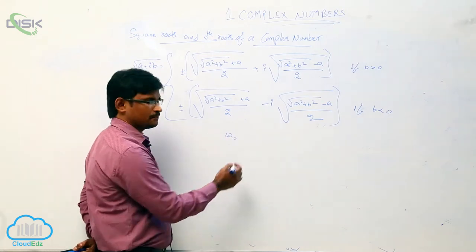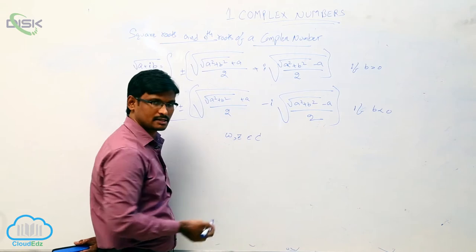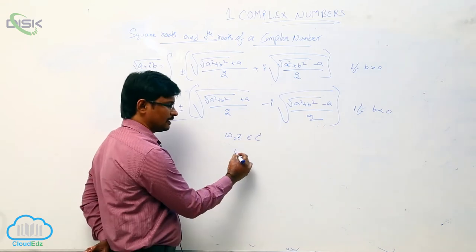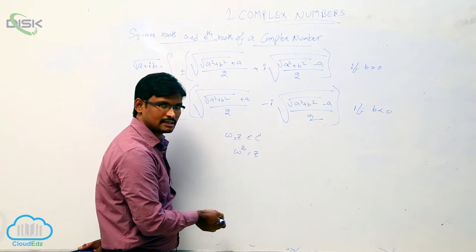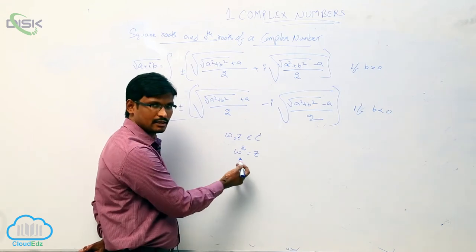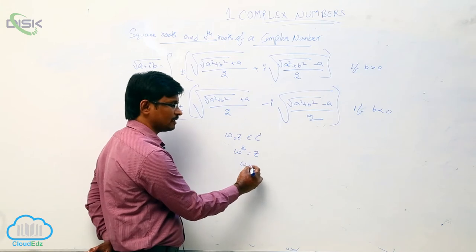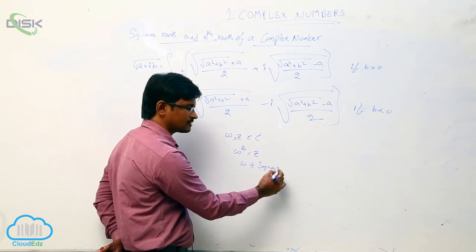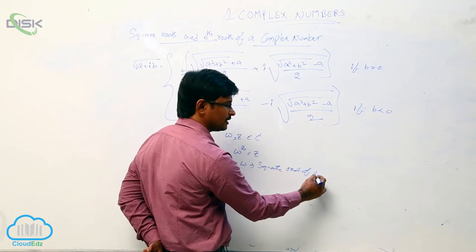Let W and Z belong to the complex numbers. If W squared equals Z, then Z satisfies W squared, and we can say that W is called the square root of the complex number Z.